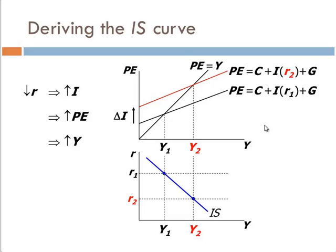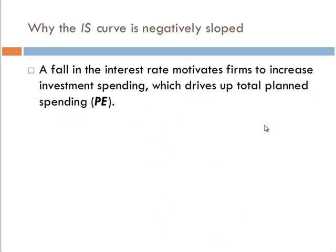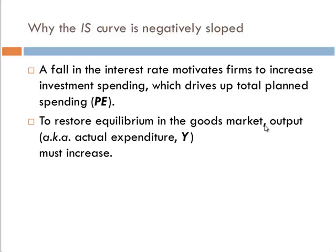We connect the dots. We should figure this out for each interest rate and trace them all out, but for right now we're just going to assume the IS curve is linear. Notice that it's downward sloping. As the real interest rate lowers, investment goes up. If investment goes up, we'll have a higher equilibrium level of income. A fall in the interest rate motivates firms to increase investment spending, which drives up total planned expenditure, and to restore equilibrium we'll have an increase in equilibrium output.